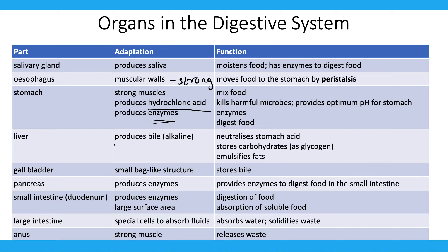The liver produces bile. We're going to have a look at bile in another video, but here you need to know that the liver produces bile, which is an alkali substance that neutralizes the stomach acid. It also stores carbohydrates and emulsifies fats. The gallbladder is a small bag-like structure and it stores the bile. So bile is produced in the liver and stored in the gallbladder.